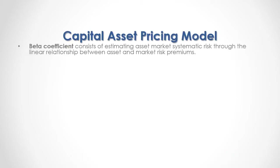The beta coefficient consists of estimating an asset's market systematic risk through the linear relationship between asset and market risk premiums. As a formula, the beta coefficient of the asset equals, in the numerator, the covariance between asset and market risk premiums, divided by the variance of the market risk premiums.